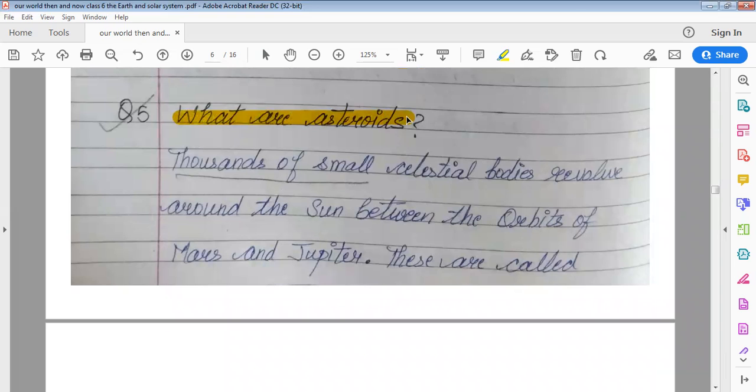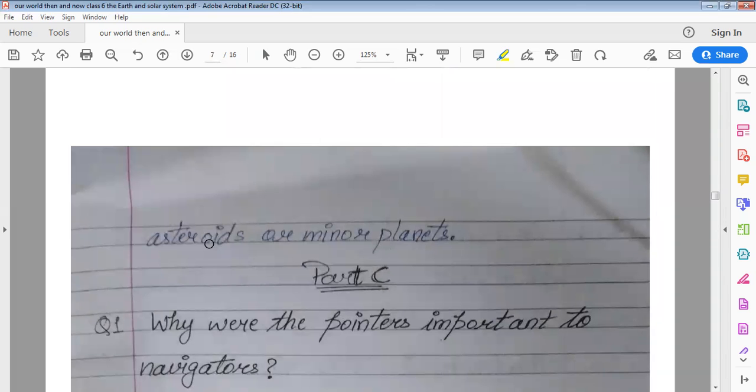What are asteroids? Thousands of small celestial bodies revolve around the sun between the orbit of Mars and Jupiter. These are called asteroids or minor planets.